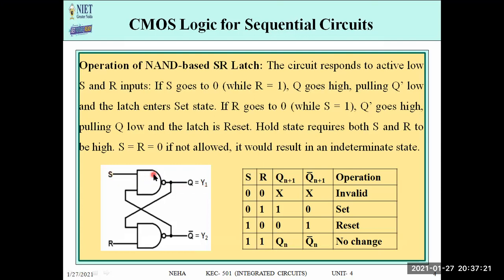The other input to the second NAND gate is R, and the other input is Q. So for Y2, the inputs are R and Q to the NAND gate, giving Y2 = R·Q whole bar. These are the Boolean expressions we will use for CMOS logic design of the NAND-based SR latch.